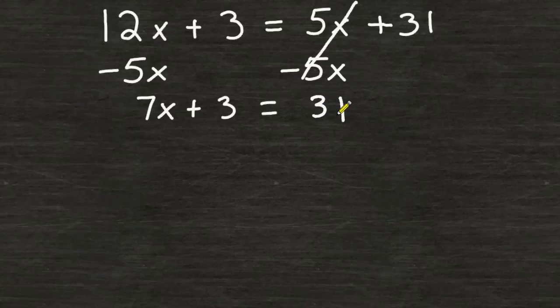The next thing that we are going to do is we are going to eliminate the plus 3 on the left hand side by doing the opposite which is to take away 3. Opposite integers will cancel each other out to be 0. To balance our equation, we have to subtract 3 from the other side. And 31 take away 3 is 28.